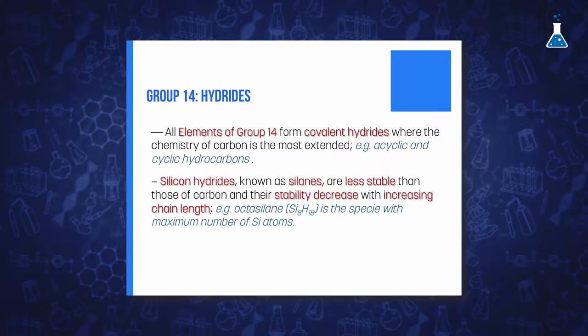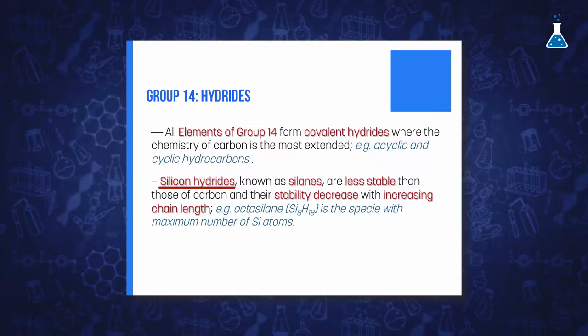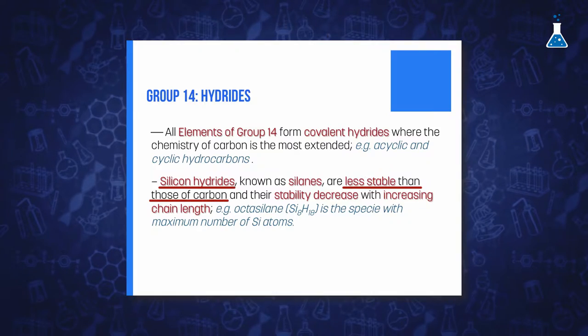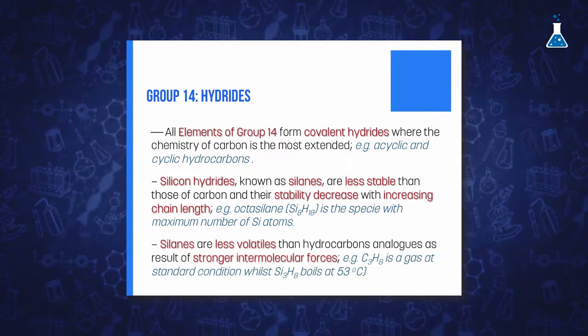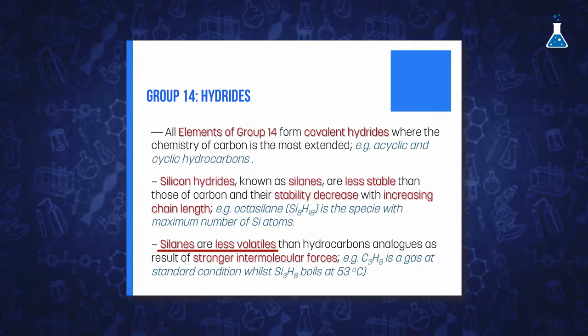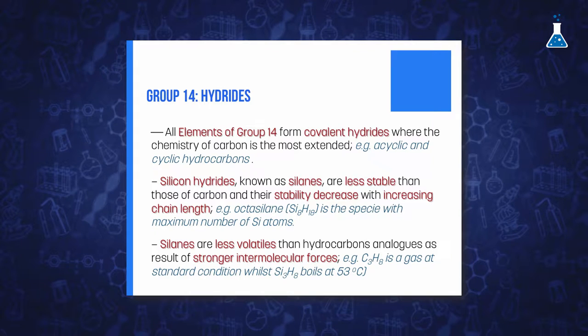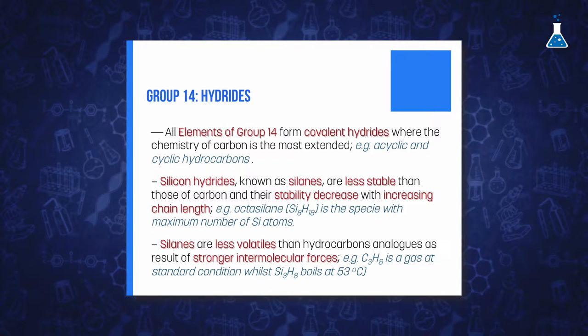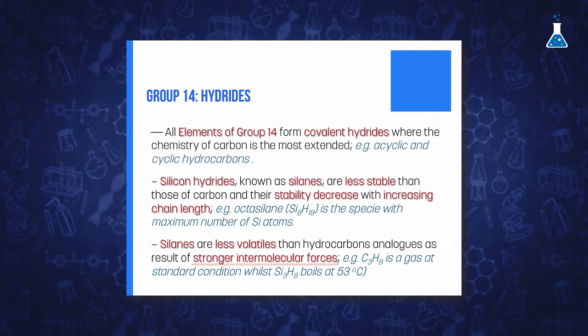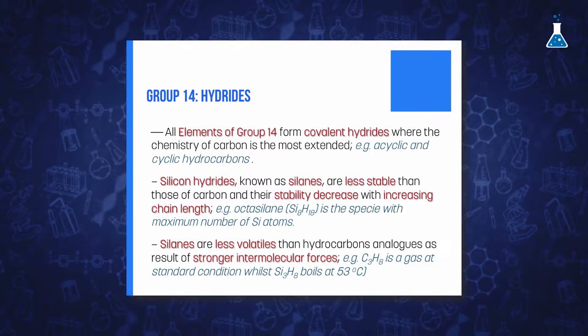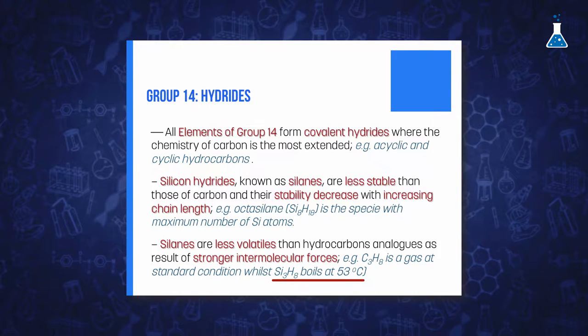Silicon shows a family of hydrides which are comparatively less stable than those of carbon. These hydrides, known as silanes, are known in a more reduced number than hydrocarbons due to the lesser tendency of silicon to show catenation, with octasilane being the species with the maximum number of silicon atoms. It is also noteworthy that silanes are less volatile than the hydrocarbon analogs as a result of the greater number of electrons and stronger intermolecular forces. For instance, propane is a gas at standard conditions while trisilane boils at 53°C.